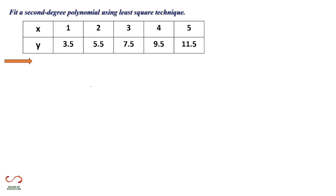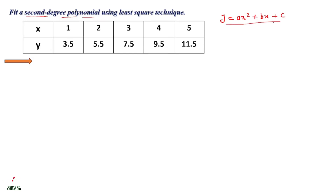There is a step-by-step procedure to solve this numerical and fit this equation using the least square technique. Read the numerical carefully — the data is given. Fit a second degree polynomial using least square technique. When you see the term 'second degree polynomial', the equation is y = ax² + bx + c. This is the general form and can be asked in different ways, such as application-based numericals with temperature relations.